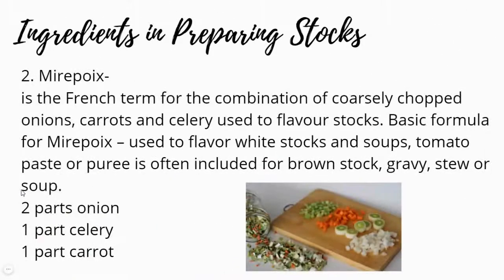2. Mirepoix is the French term for the combination of coarsely chopped onions, carrots, and celery used to flavor stocks. Basic formula for mirepoix, used to flavor white stocks and soups. Tomato paste or puree is often included for brown stock, gravy, stew, or soup. 2 parts onion, 1 part celery, 1 part carrot.